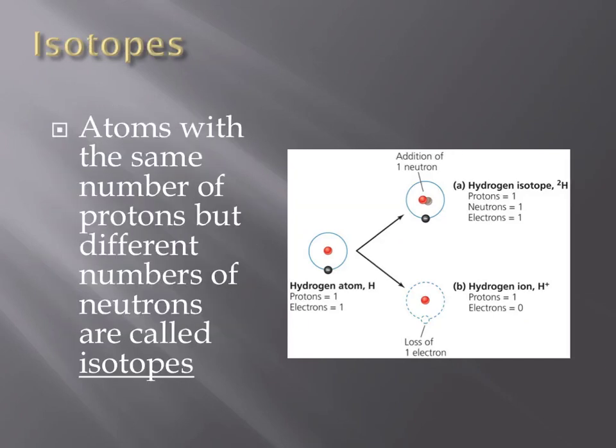The term isotope can be used to describe two atoms of the same atomic number that have a different atomic mass. They have the same number of protons, they are the exact same element, but they have a different number of neutrons. A typical hydrogen atom, again shown on the left, has one proton and zero neutrons. The particle on the top right has one proton and one neutron. Since the atomic number is one, it is still hydrogen, but they have a different atomic mass. For this reason, these two hydrogen atoms could be called isotopes of one another.